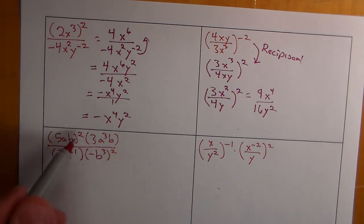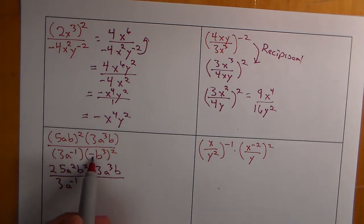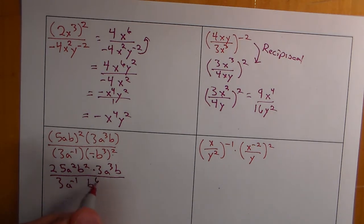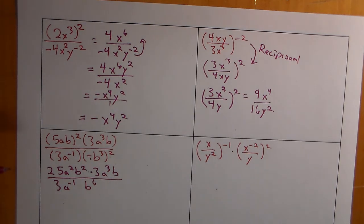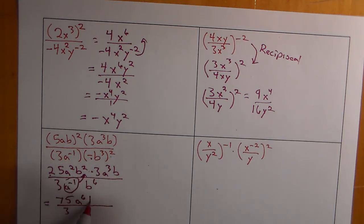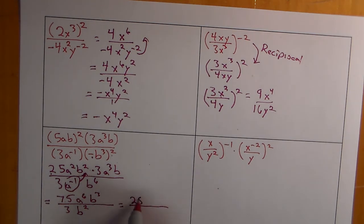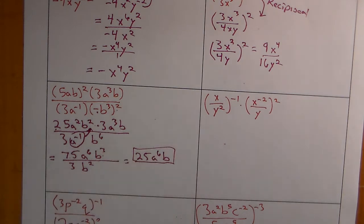For the next problem, apply the power rule first: 25a squared b squared times 3a to the third b. We have 3a to the negative 1; the negative 1 squared becomes a positive 1, and that gives b to the sixth. Move the negative exponent up. Combining: 25 times 3 is 75; a squared, a to the third, and a to the first coming up gives a to the sixth; b to the third over b squared leaves 1 b on top. 75 over 3 is 25, so the final answer is 25a to the sixth b.